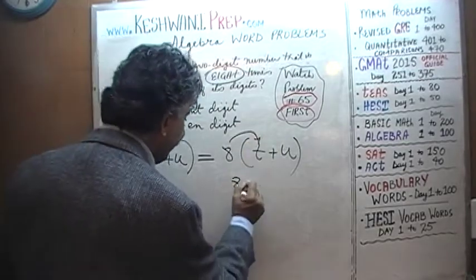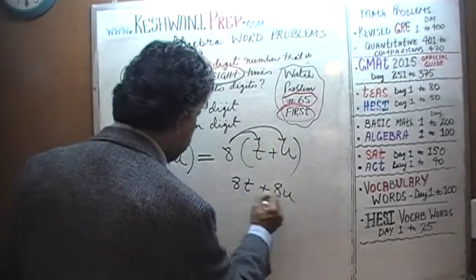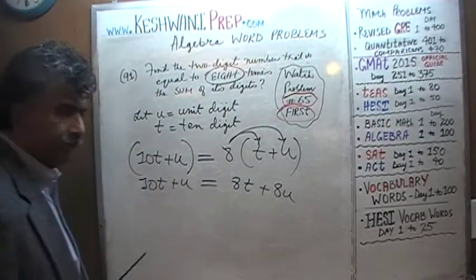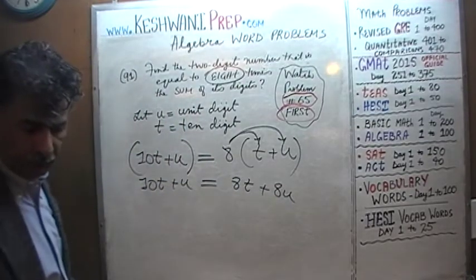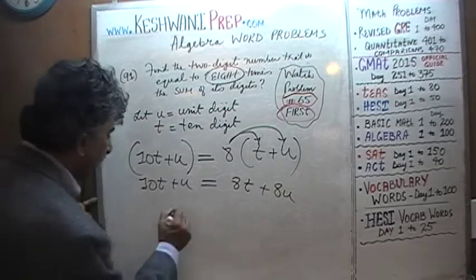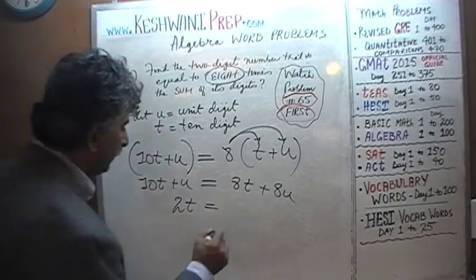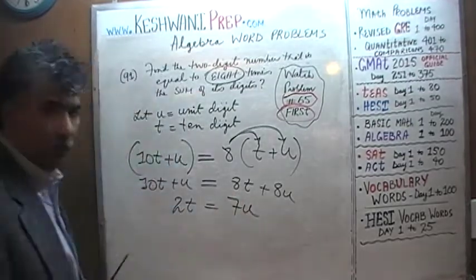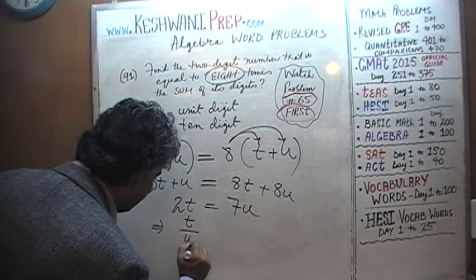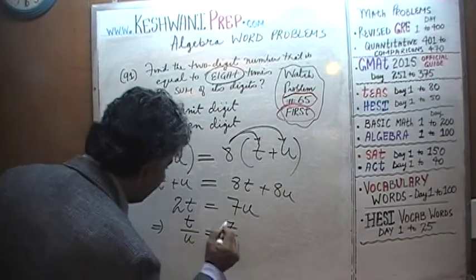So we have: 10T plus U equals 8T plus 8U. Bringing the U to one side and T to the other, we end up with 2T equals 7U. This in turn implies that the ratio of the tens digit to the unit digit is 7 to 2.